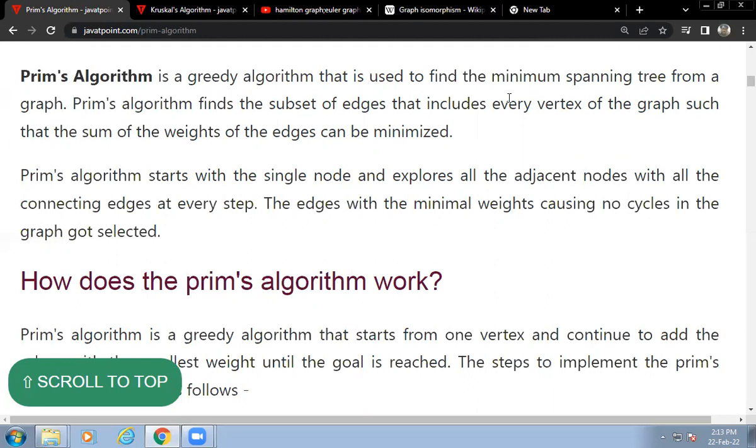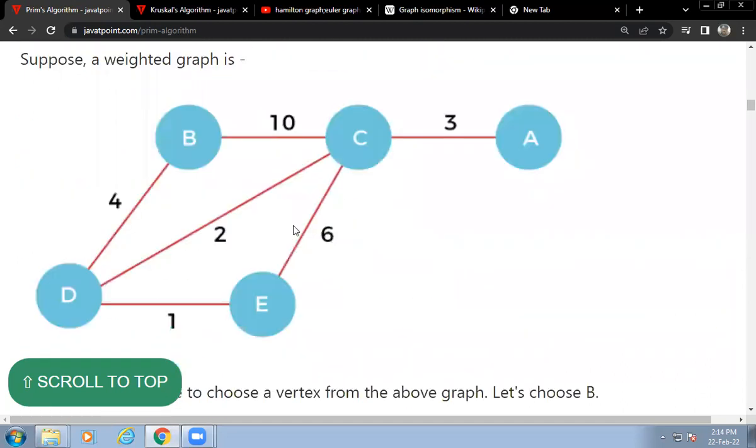Prim's algorithm starts with a single node and explores all the edges and nodes with all the connecting edges at every step. The edges with the minimum weight causing no cycles in the graph get selected. Let's try to see one example.